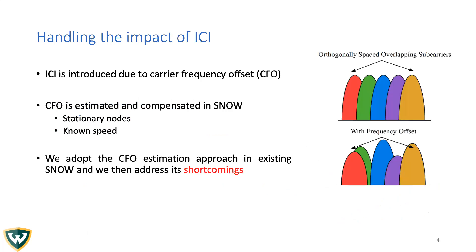First, we address the ICI impact. ICI is mainly introduced due to CFO, or carrier frequency offset, between the transmitter and receiver, due to many reasons such as imperfect hardware frequency mismatch and Doppler shift due to mobility. The existing implementation of SNOW estimates and compensates for CFO in two cases: when the nodes are stationary and when the nodes are moving at known speed. However, SNOW nodes are energy-constrained and low-cost and may not be equipped to determine speeds. In our approach, we adapt the CFO estimation approach in existing SNOW and address its shortcomings.